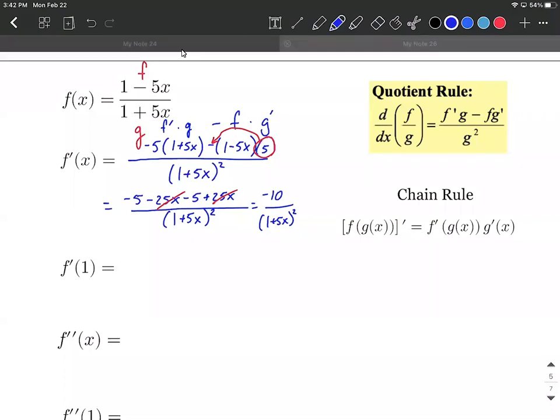All right, our next step is we want to go ahead and fill in and evaluate the first derivative that we just found at an x value of 1. So we take our 1 and we plug it in for the x. And then simplifying down here, we have 1 plus 5 times 1, which is going to be 6 to the second power. So negative 10 over 6 squared is 36.